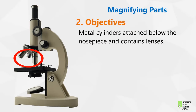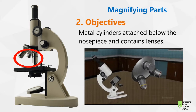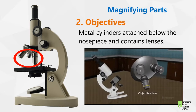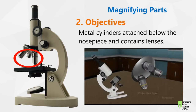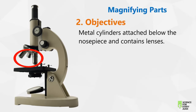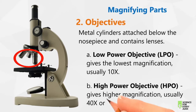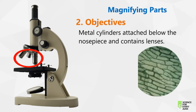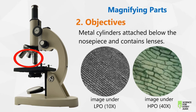The second magnifying part of the microscope are the objectives — the metal cylinders attached below the nosepiece that contain lenses. There are two common objectives found in a compound microscope: the low power objective or LPO, and the high power objective or HPO. The LPO gives the lowest magnification, usually 10x the original size, while the HPO is usually 40x or 43x. In this picture we can see the difference between the specimen viewed under LPO and an image viewed under HPO.